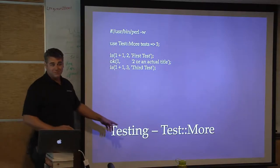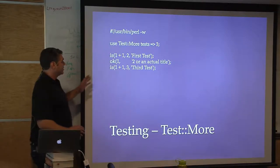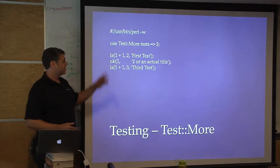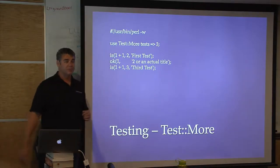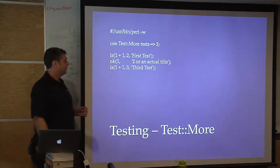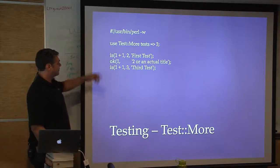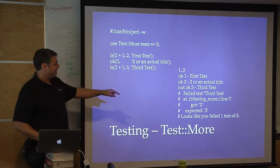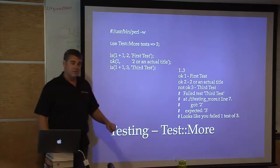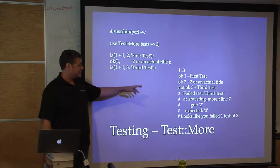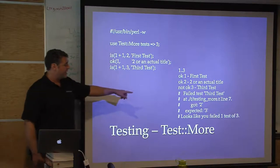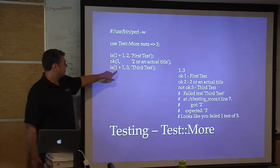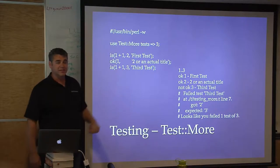Fortunately we have Test::More. Test::More can be dropped in wherever you're using Test::Simple — just replace it and your tests run perfectly. We tell it how many tests and we have is(), isn't(), and ok(). This time it gives us more information: not only did it fail, but it says 'I got a 2 and I was expecting a 3.' So it shows you what it got versus what it was expecting.